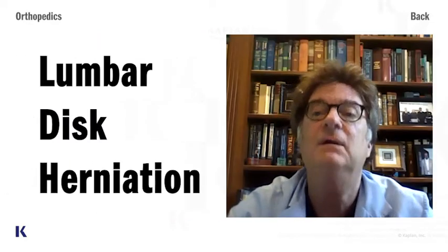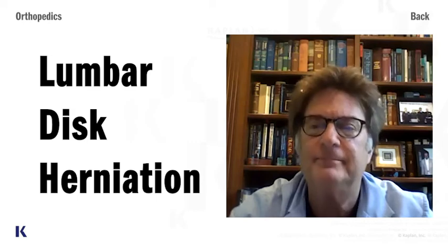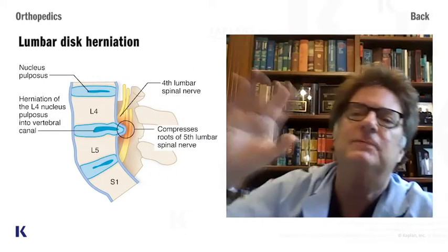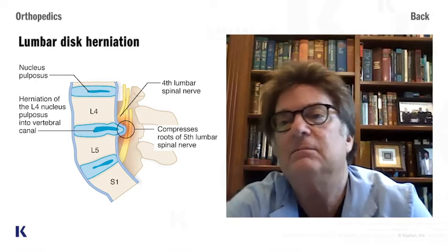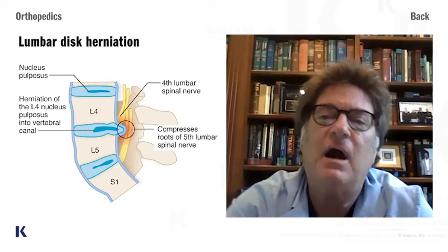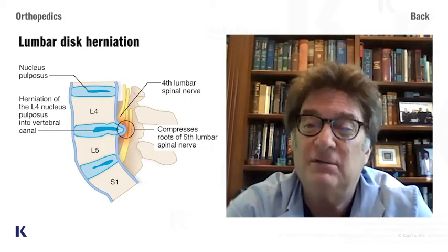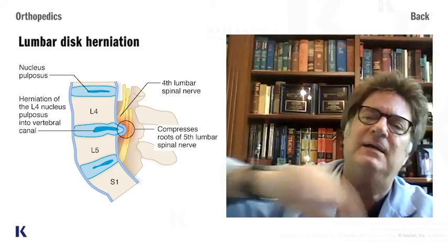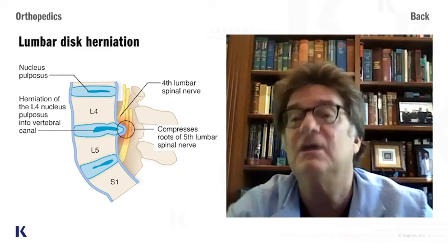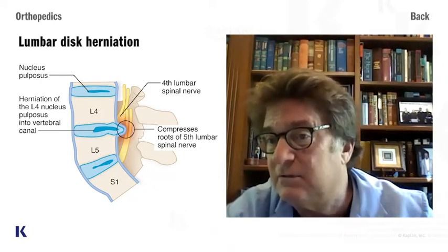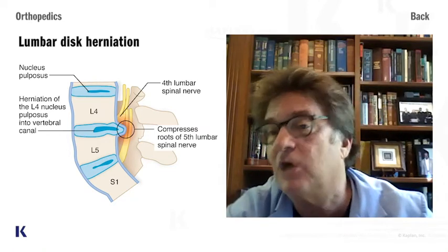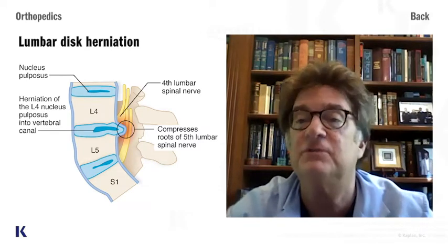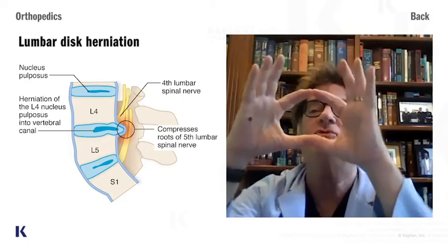What we're going to talk about is lumbar disc herniation. Remember, you have your vertebral bodies separated by discs — shock absorbers. The shock absorbers are like a jelly donut: the outside of the disc is fibrous, called the annulus fibrosus, and the inside is like the jelly — that's the nucleus pulposus.